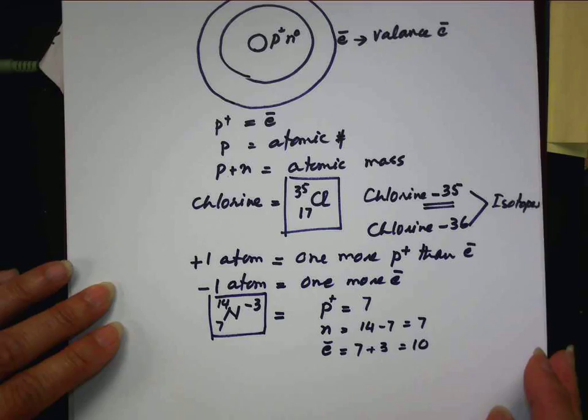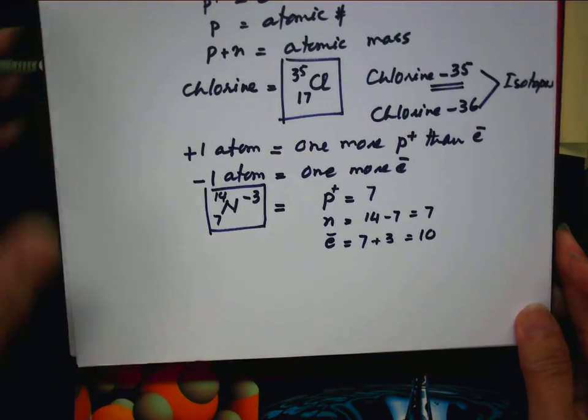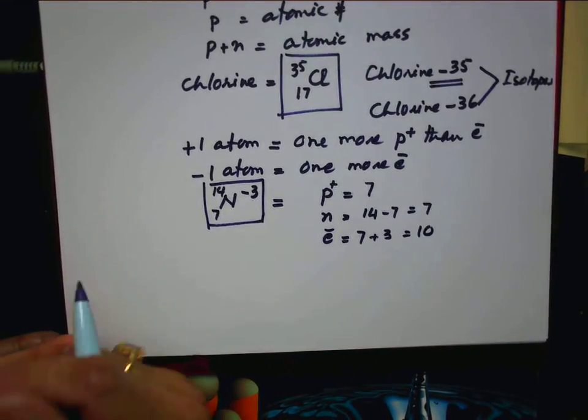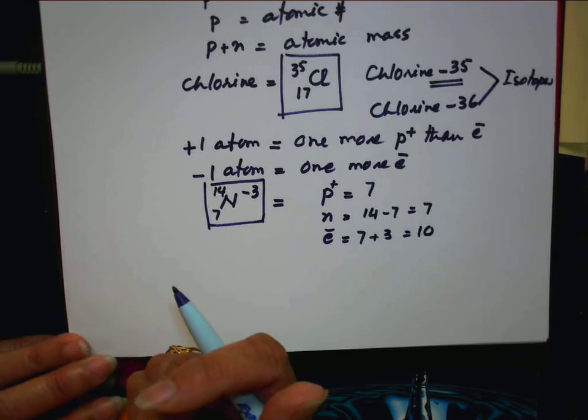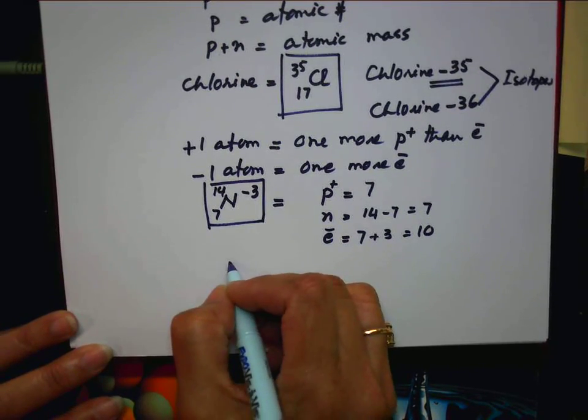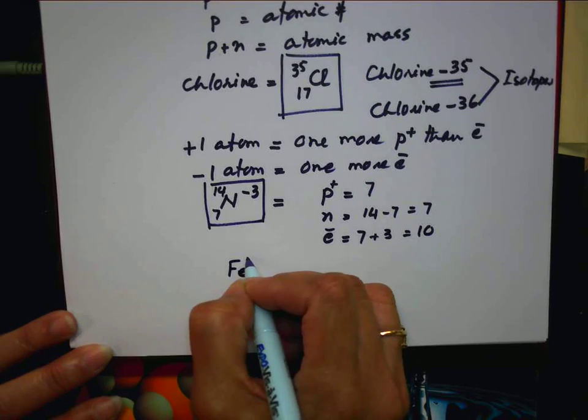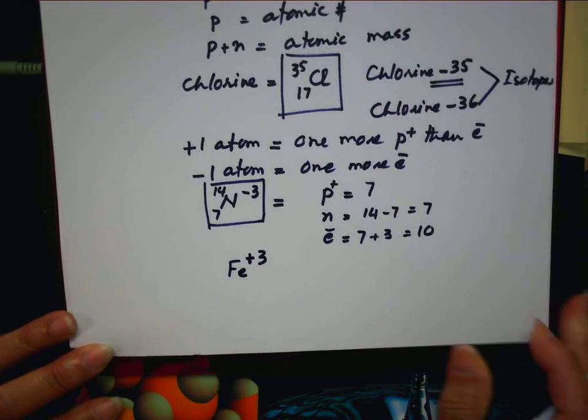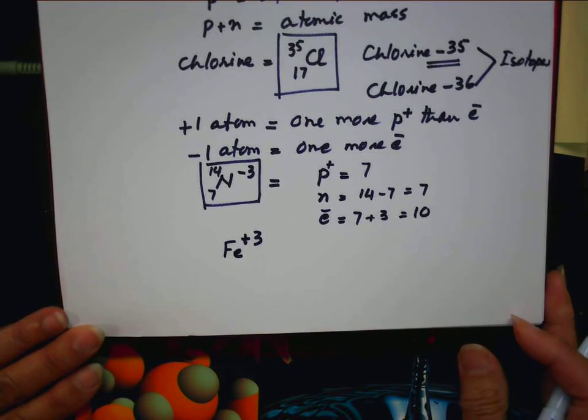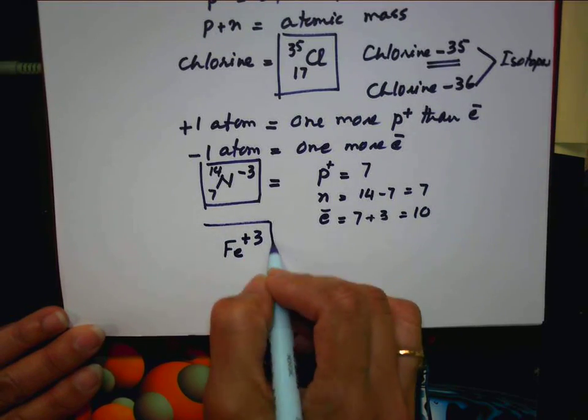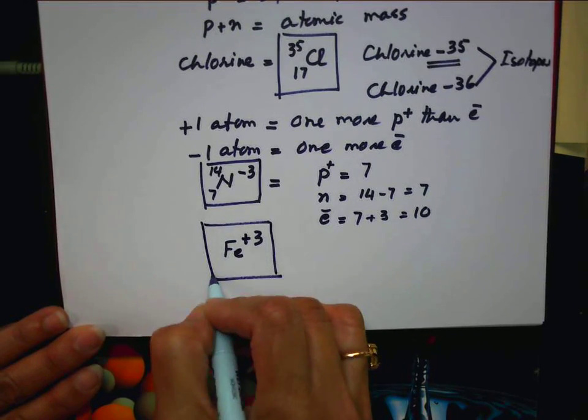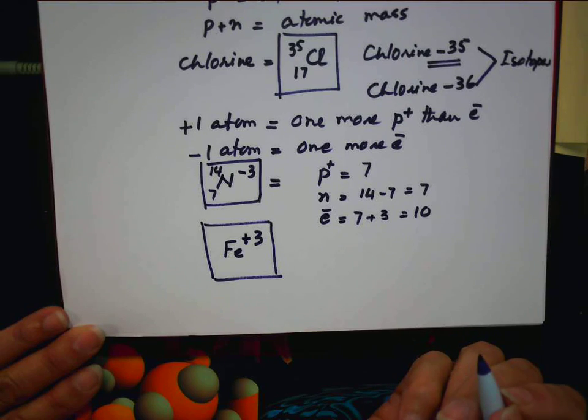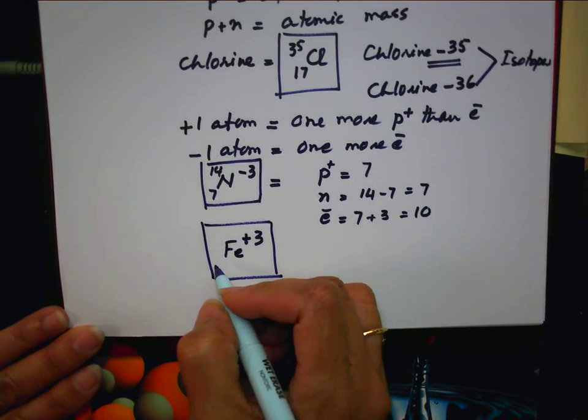Let's do one more for a positive ion. So which one is positive? Let's see. Fe. Fe plus three. Now, what is Fe, atomic number and atomic mass?